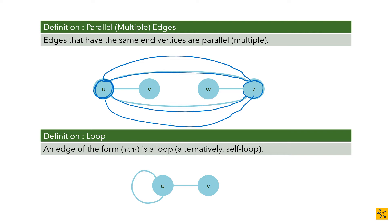We also have a thing called a loop. A loop is a situation where a vertex is connected to itself — for example, you can be your own friend. In computer science, the term self-loop is often used instead of loop, because people confuse a loop with a cycle, which is a different concept you'll encounter next session. A loop is an edge that goes from vertex U back to vertex U, referred to as edge UU. That is a loop or self-loop.